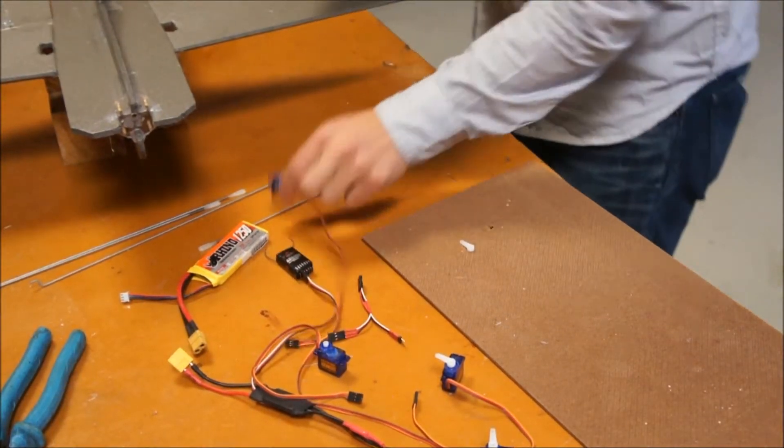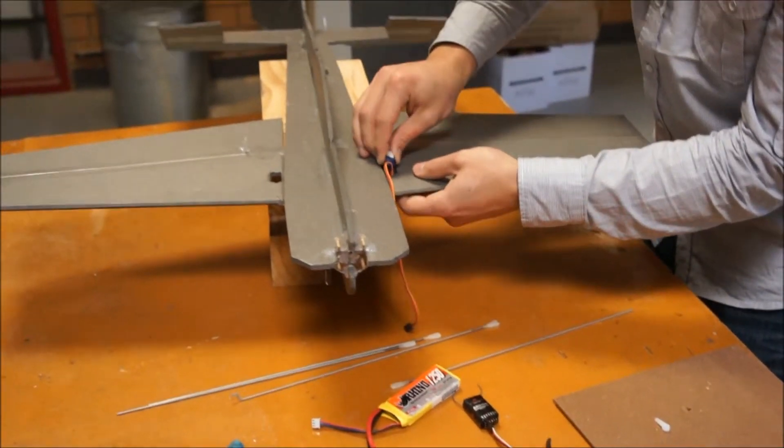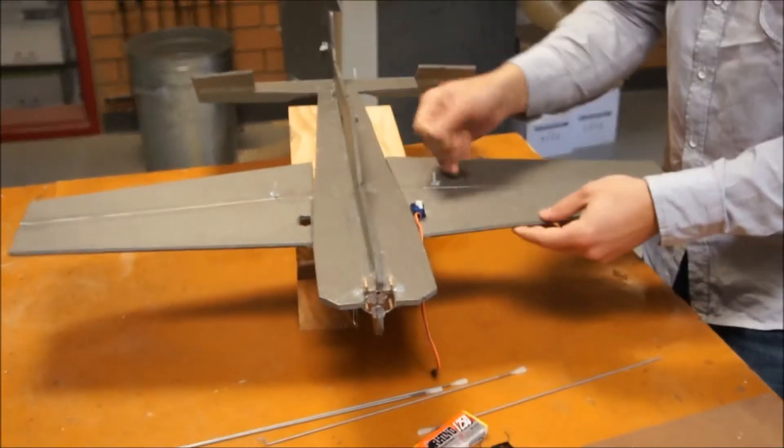So if we get one of our servos and we're going to put it in with the control wire, the cord facing backwards.